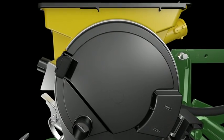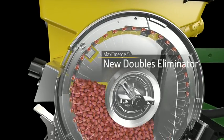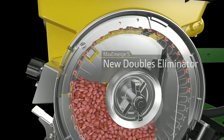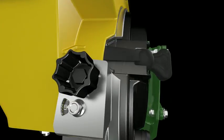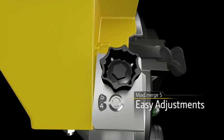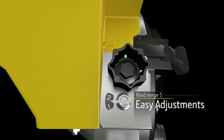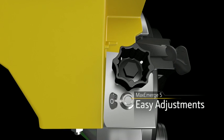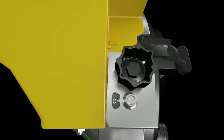Throw in the newly improved doubles eliminator and you can achieve 99% singulation unquestioned. Plus, we've added a convenient dial indicator to make it quicker and easier to adjust settings for corn, soybean, or any other crop you plant.